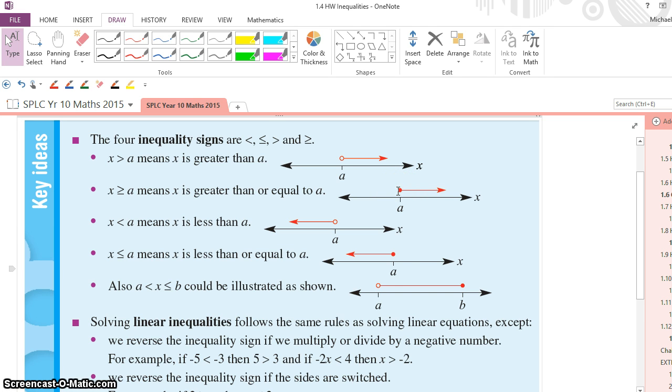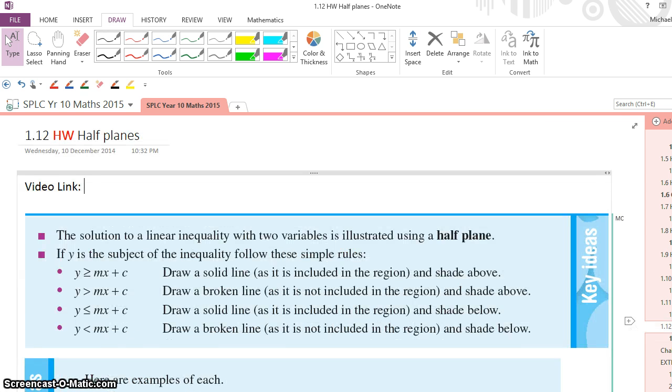Similarly for less than and less than or equal to, we were using closed circles to indicate the point was included, and open circles to indicate that the point was excluded. What does this have to do with what we're looking at now?